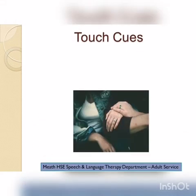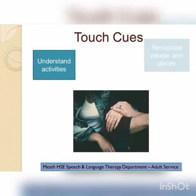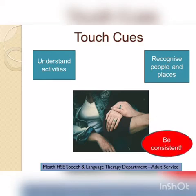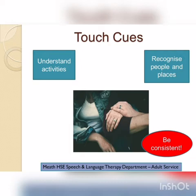The first modality we will discuss is touch. Touch is used to help people understand activities and to recognise people and places. The key with touch cues is to be consistent. When all communication partners use the same touch cues consistently in daily routines, it helps the person to understand and make sense of their surroundings, as well as to recognise the people they meet. For example, a hand on the shoulder may mean sit down, whereas a hand on the hand may mean stand up. You can agree these cues amongst yourselves.